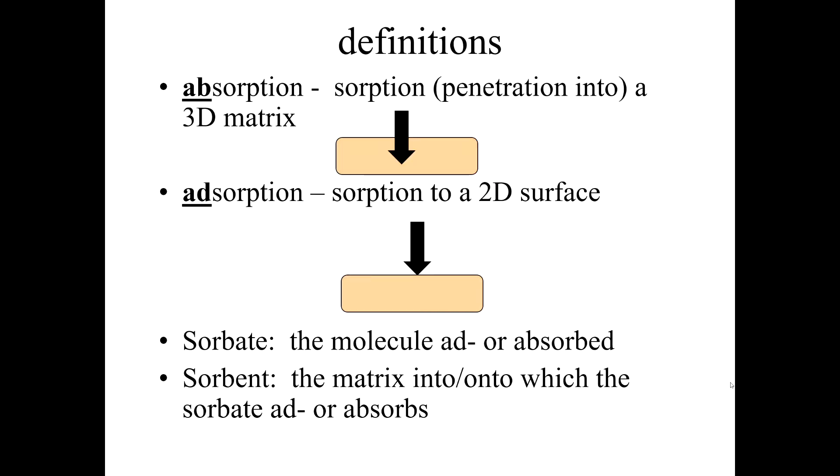First thing to recognize is that there are two different types of sorption. We use the word sorption when we don't know which of these two mechanisms is operating, which is frankly a lot of the time. Absorption with a 'b' refers to sorption or penetration into a three-dimensional matrix. This is like if you had octanol in your system - like we just did that example problem where we assumed a wastewater treatment plant was a three-phase problem of water, air, and octanol - that would be absorption inside the octanol. Frequently we think of absorption as happening when we have particulate organic matter in the water column.